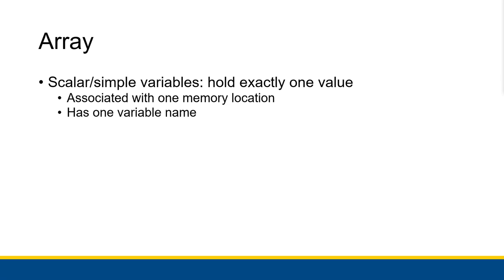In the case of numeric data types — integers, doubles, and decimals — that memory location is going to be of a fixed size. An integer variable only holds one integer. You can change what that integer's value is, but it's only holding one single integer. It also has one variable name. When you create an integer variable using the dimension statement, you assign a name to that memory location, associating one name with one single memory value.